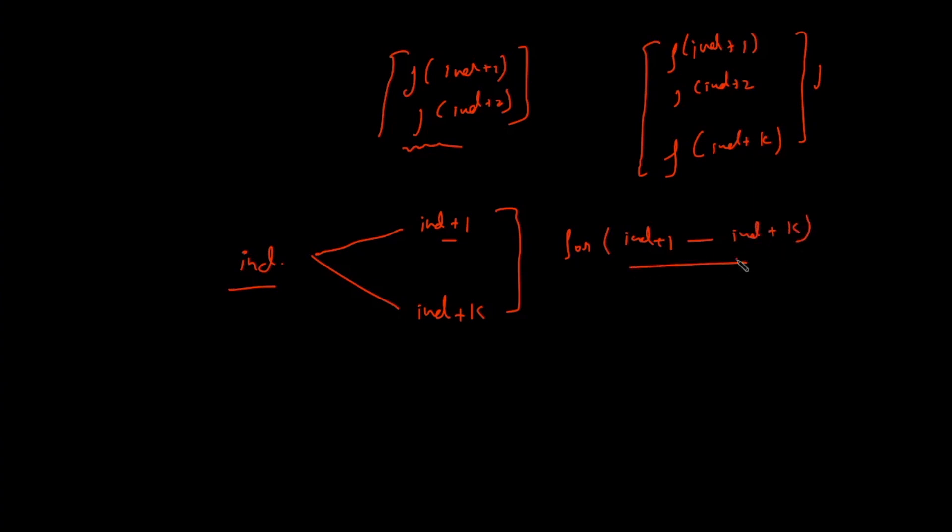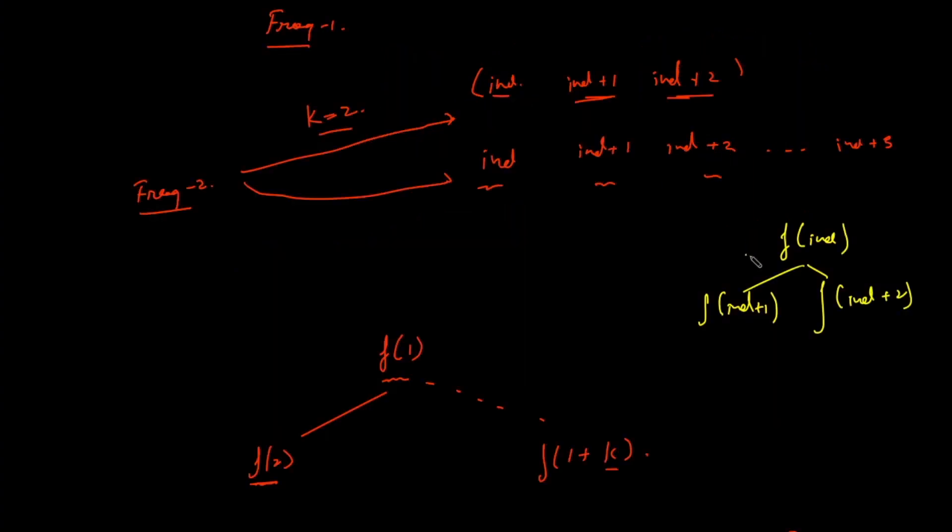Bearing this in mind, everything remains the same as what we did in Frog 1. So what will be the complexity of this? In the Frog 1 problem, if you are standing at any given index, we can move to index plus 1 and index plus 2. So the complexity over there was n times 2.